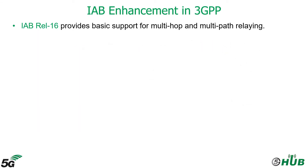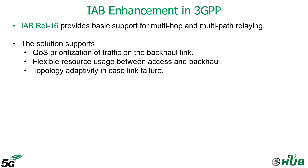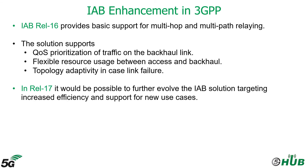The IAB node provides basic support for multi-hop and multi-path relaying. The solution supports quality of service prioritization of traffic on the backhaul link, flexible resource usage between access and backhaul, and topology adaptivity in case of link failure. In Release 17, it will be possible to further evolve the IAB solution targeting increased efficiency and support for new use cases.